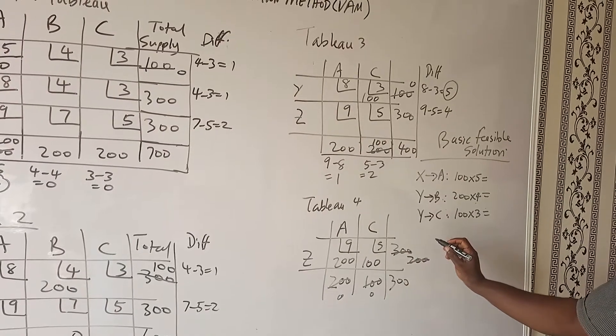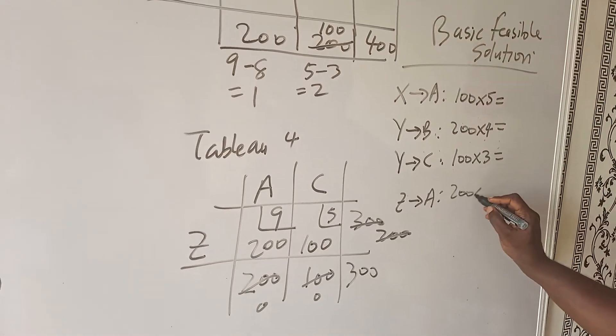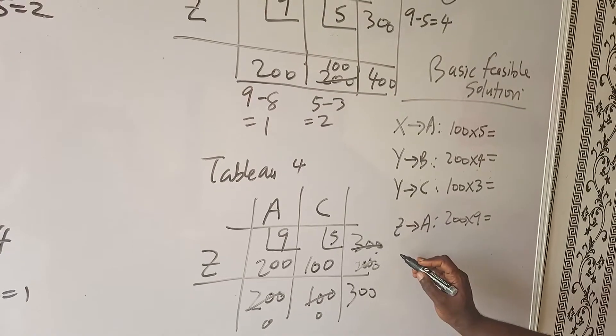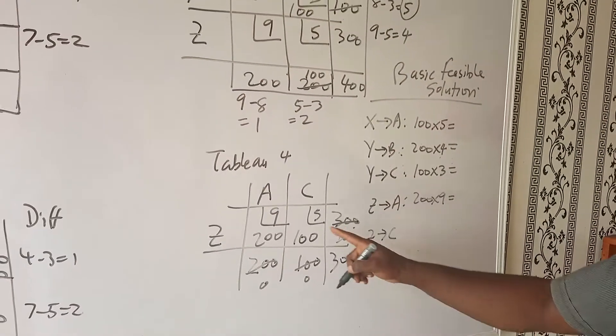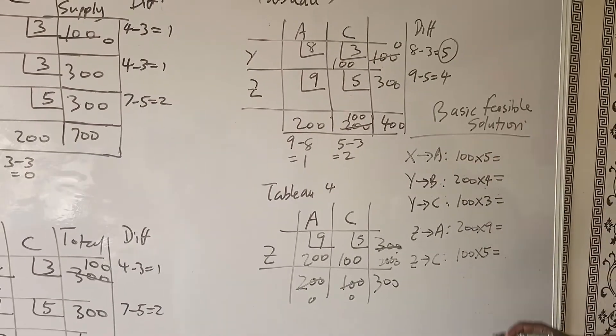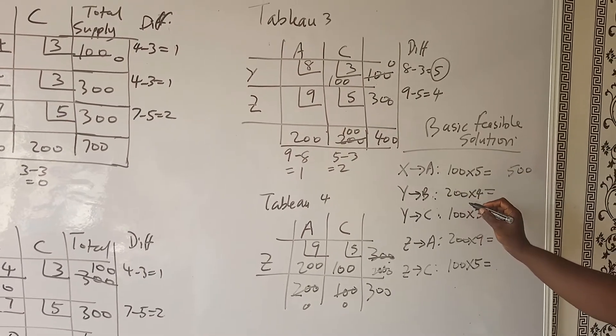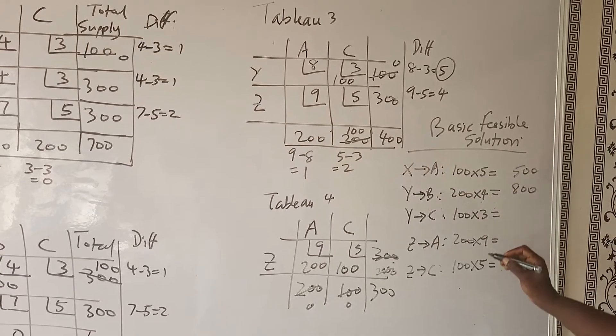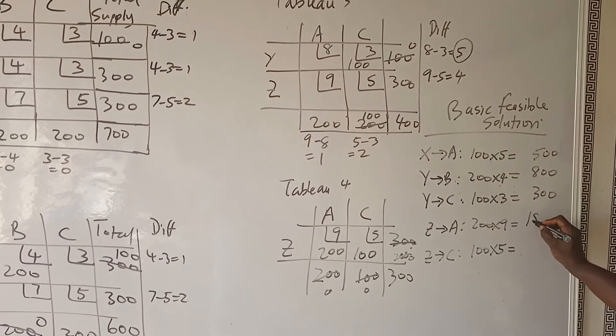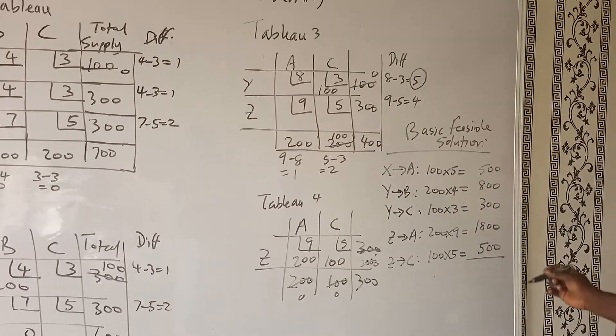The next one, this is table 3. Table 3, we placed Y to C. That would be Y to C and that gives us 100 times 3. The last table, we have to do 2 at a time. So that last table gives us Z to A, that gives us 200 times 9. And then this would be Z to C, Z to C, that gives us 100 times 5.